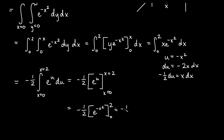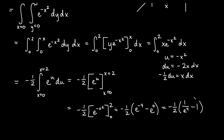Let's plug in. We get negative 1 half times e to the negative 4 minus e to the 0. We could go ahead and say negative 1 half times (e to the negative 4 minus 1), or equivalently 1 over e to the 4 minus 1. We'll go ahead and keep this as our answer. That's the answer to our integral that we couldn't do in the other order, but we did it now integrating dy dx.